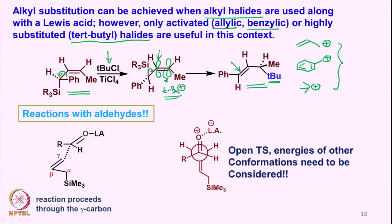The reaction of course has to be analyzed through the open transition state, and the energies of other conformations have to be considered in each case. When the Lewis acid interacts with the aldehyde, the reaction occurs via the gamma carbon atom.